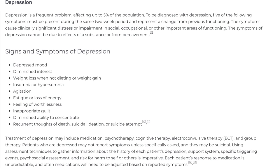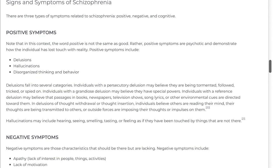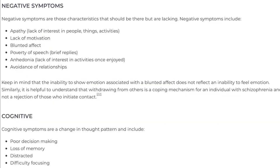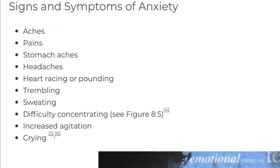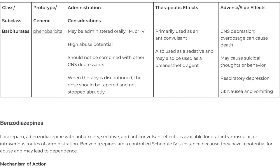There are three types of symptoms related to schizophrenia: positive, negative, and cognitive. Note that in this context, the word 'positive' is not the same as good. Rather, positive symptoms are psychotic and demonstrate how the individual has lost touch with reality. Positive symptoms include delusions, hallucinations, disorganized thinking, and behavior.